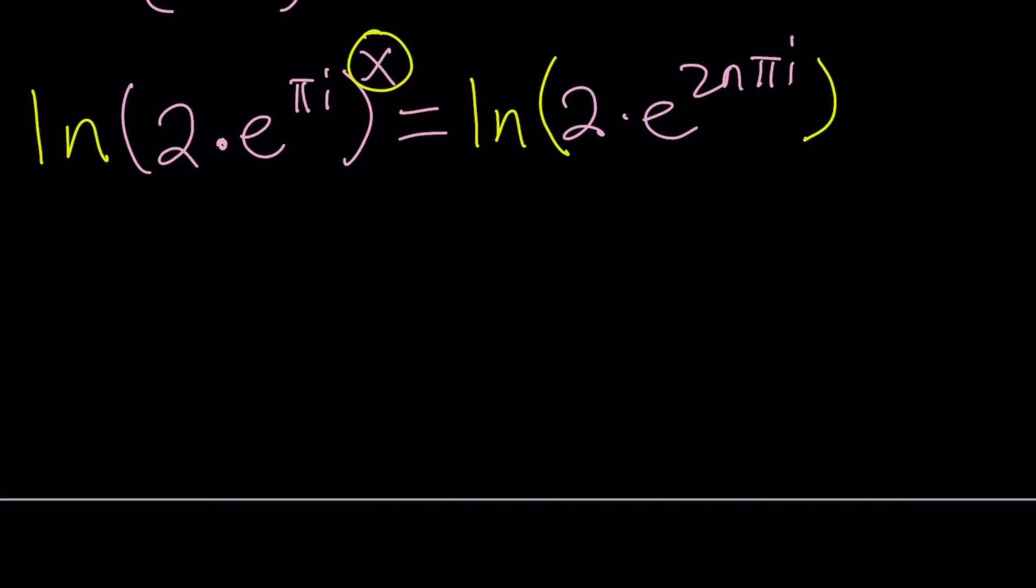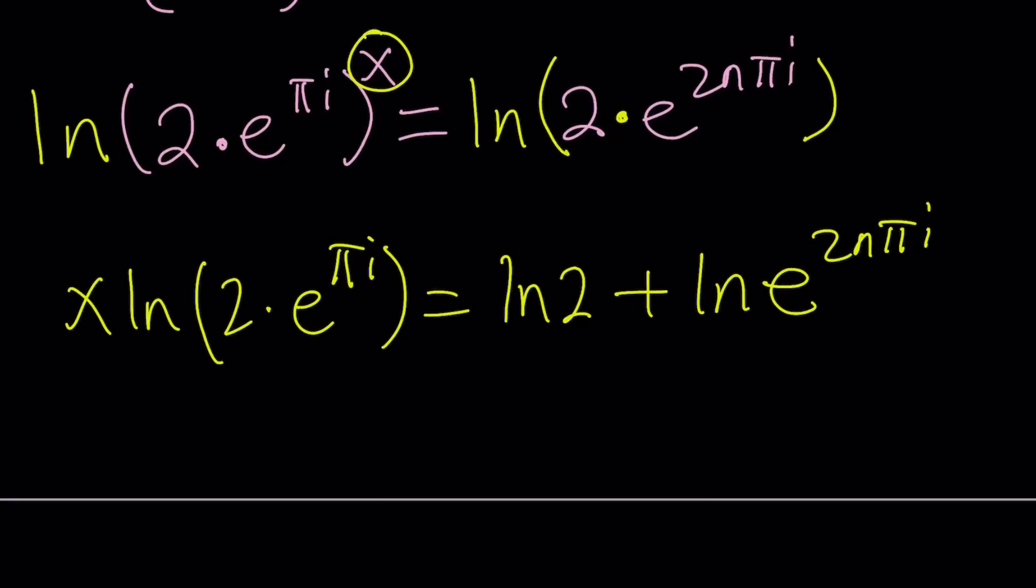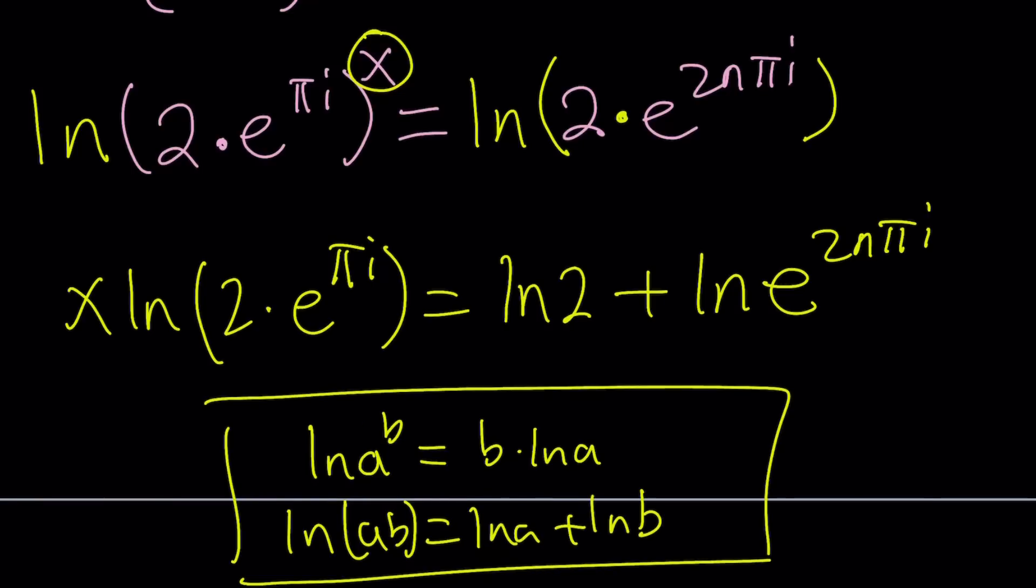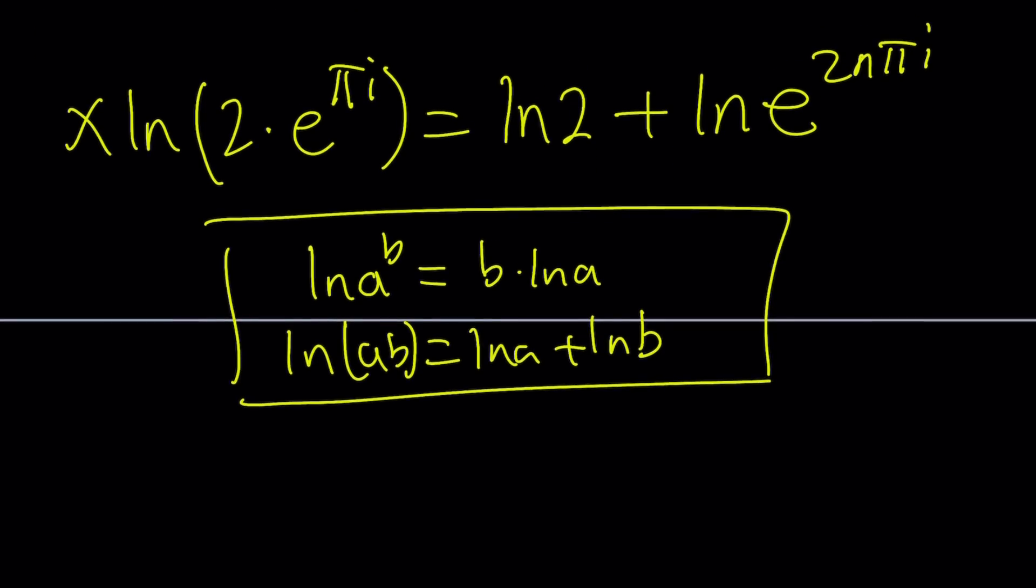And then we're going to get the following. Move the x to the front: x ln 2 times e to the power pi i. And then now this is a product, so we can write it as ln 2 plus ln e to the power 2n pi i. We're just using properties of logs, which tells us whenever there's an exponent like ln a to the power b, you can write it as b ln a. And any time we have something like ln a times b, you can write it as ln a plus ln b. So, those are the two properties that we used so far. And this applies to all the bases, not just ln.